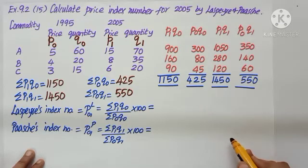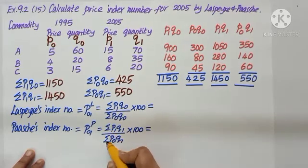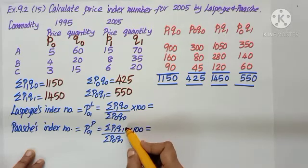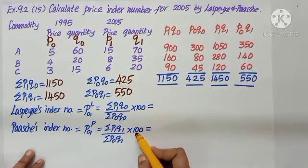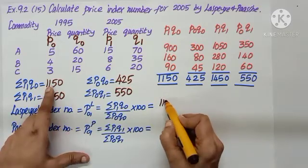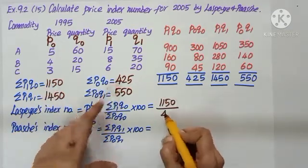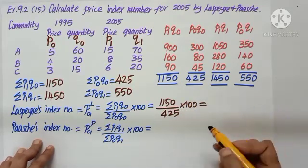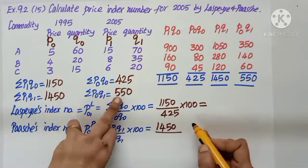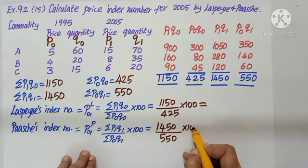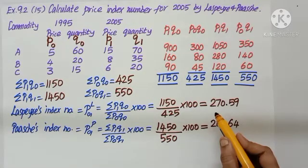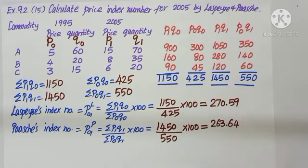Laspeyre's, let me substitute P1Q0, 1150, P0Q0, 425 into 100. Let us simplify. P1Q1, the total is 1450, by sigma P0Q1, 550 into 100. You can use calculator, simplify and write. We get the answer 270.59 and 263.6.